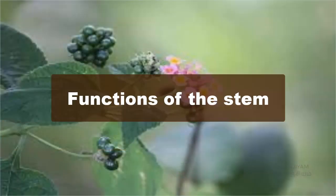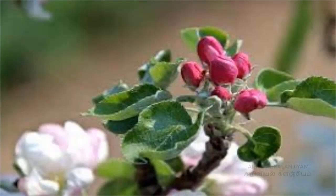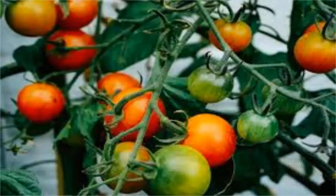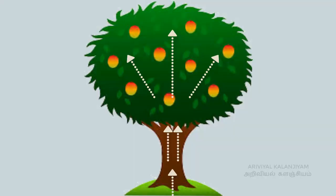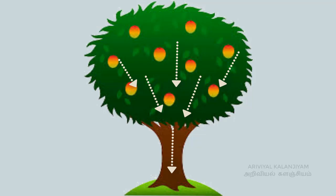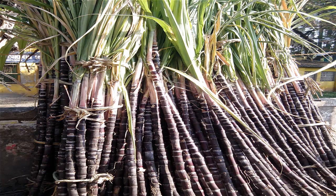Functions of the stem: The stem supports the branches, leaves, flowers, and fruits. It transports water and minerals from the roots to the upper aerial plant parts. The stem also transports the prepared food from the leaves to other parts of the plant. It stores food, as in the case of sugar cane.